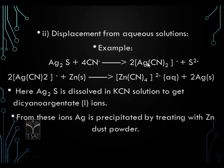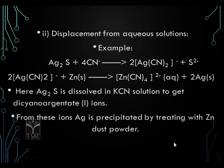To extract silver from the dicyanoargentate ion, we use more reactive zinc. Zinc, when mixed with this solution, displaces silver to separate it as a solid. The new compound formed is zinc cyanide. So first, the ore of silver with sulphur impurity was dissolved in potassium cyanide solution to get silver dicyanoargentate ions along with sulphide ions. When dicyanoargentate ions react with zinc, zinc cyanide ions are formed, and zinc displaces the less reactive silver ions. Silver is thus precipitated by treating with zinc dust powder.